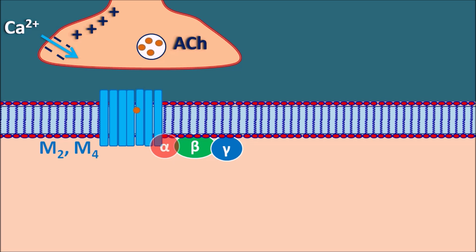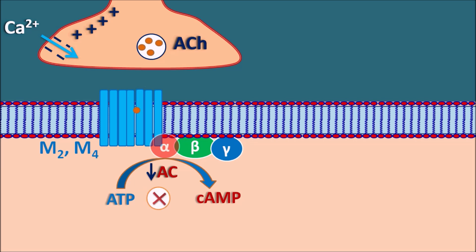M2 and M4 act through the alpha subunit, which is inhibitory in nature. Normally the alpha subunit converts ATP into cyclic AMP by activation of the adenylyl cyclase system, but M2 and M4 receptors are inhibitory, so adenylyl cyclase is inhibited such that ATP is not converted into cyclic AMP, resulting in decreased cyclic AMP levels within the postsynaptic membrane.